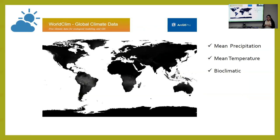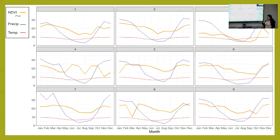Finally, I have the WorldClim datasets — a set of worldwide layers of temperature, precipitation, radiation, and other bioclimatic variables typically applied for species distribution models. I use ArcGIS Pro to extract values of mean precipitation, mean temperature, and the bioclimatic theory layers, which are different measurements of precipitation and temperature.